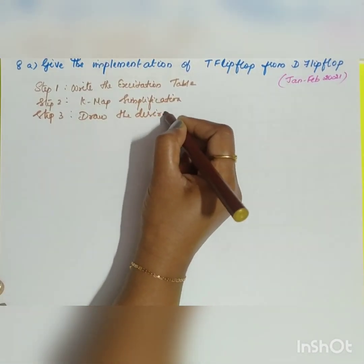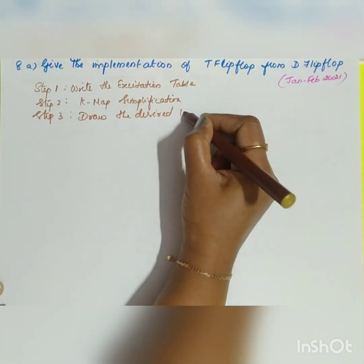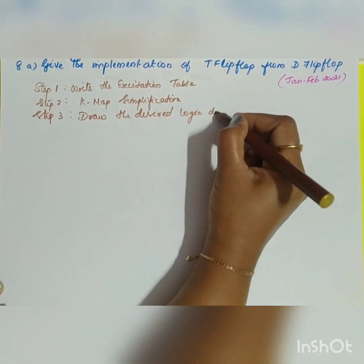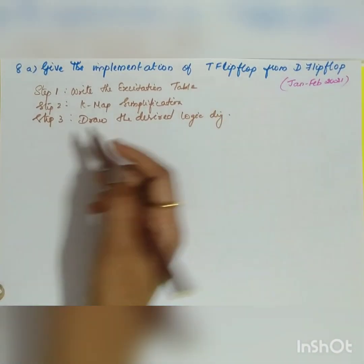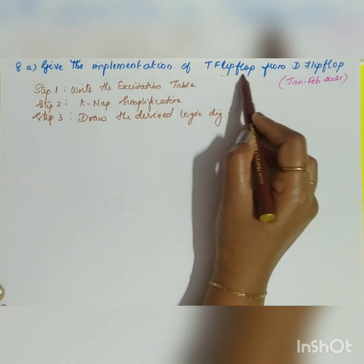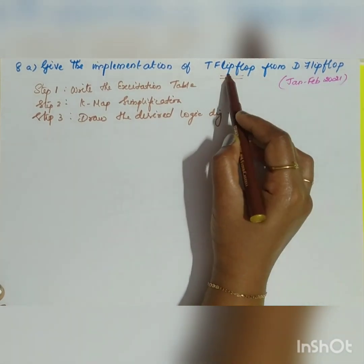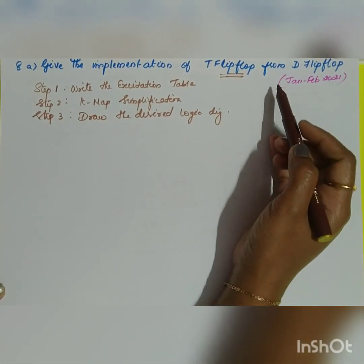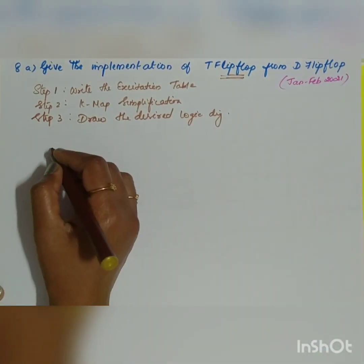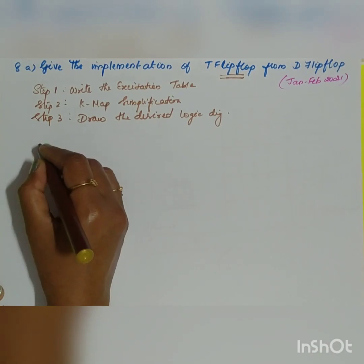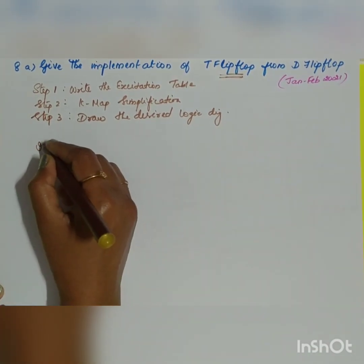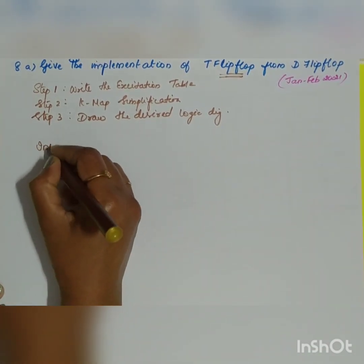These are the three steps that have to be carried out for flip-flop conversion. Here we are doing the implementation of a T flip-flop from a D flip-flop. So let us draw the excitation table. The input is going to be T.